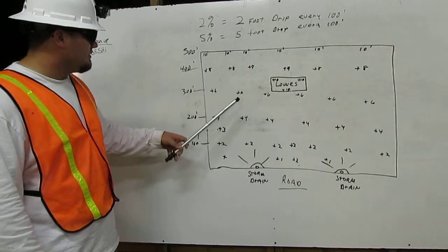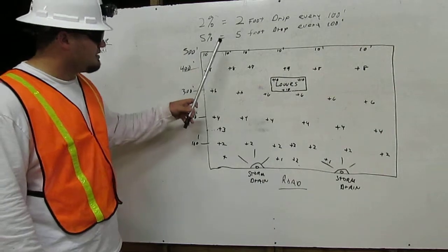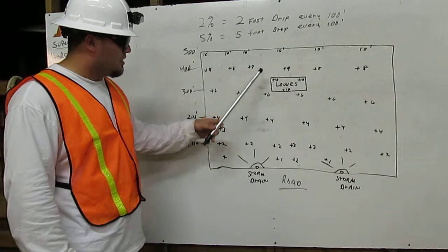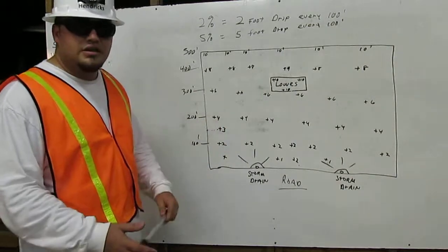300 plus 6, 400 plus 8, 500 plus 10. And the loads we're also going to build up at a plus 10 so that the water runs down into our storm drains. Thank you.